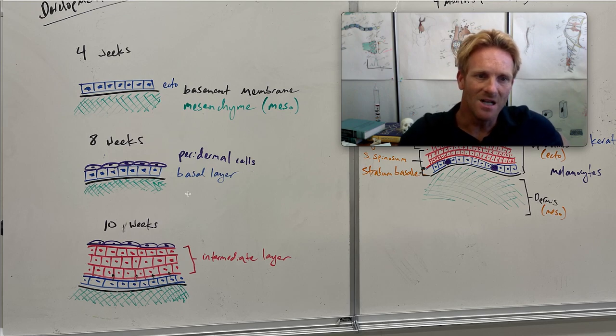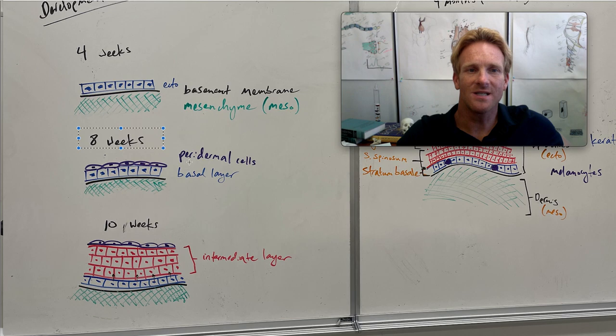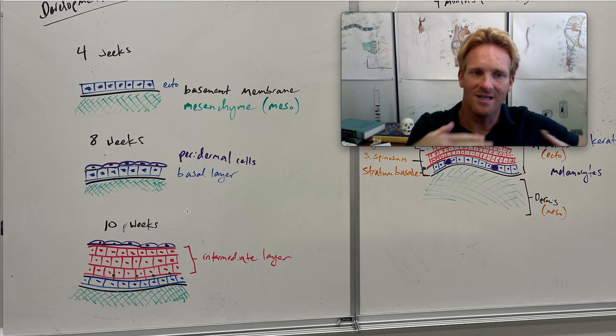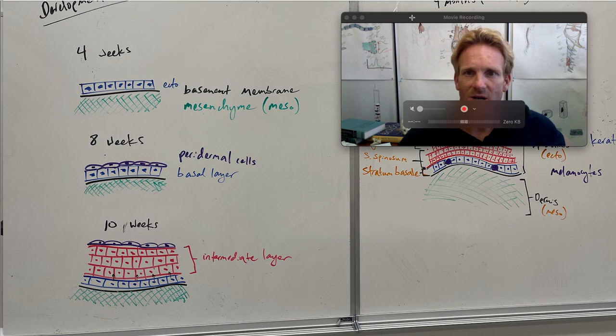And then if we jump to ten weeks, you'll notice that something else is happening. These cells of the basal layer have undergone cell divisions. These paradermal cells were produced by cell divisions from these cells of the basal layer. Now these cells of the basal layer by ten weeks have produced a couple layers of new cells which now constitute the intermediate layer, and it's all due to cell divisions of these cells of the basal layer. So really what's going on from week four to ten is that the epidermis, which is derived from the ectoderm, is just getting thicker and thicker due to cell divisions from these cells of the basal layer.